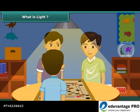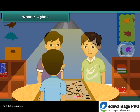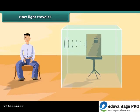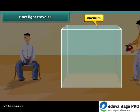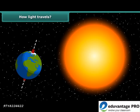Light is a form of energy, just like sound, but still different from it. We know that sound cannot travel in vacuum; however, light can travel through a vacuum. That is how the light from the sun reaches our planet Earth.